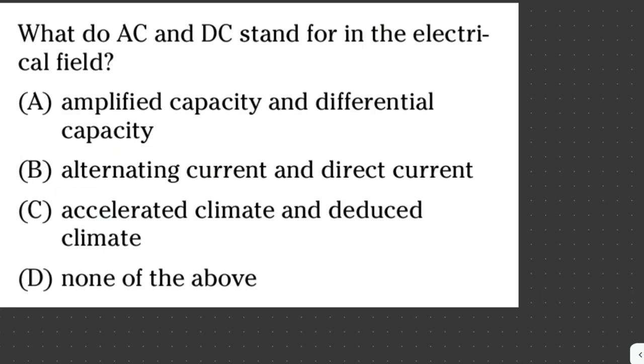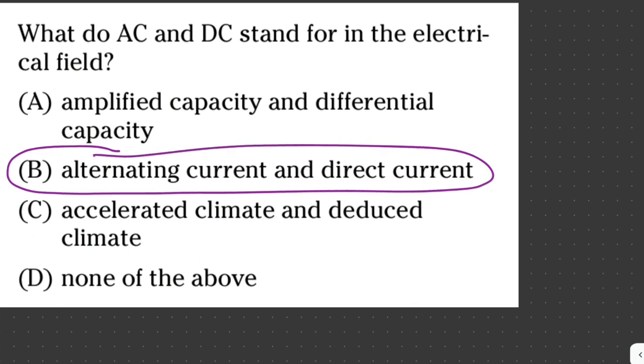What do AC and DC stand for in the electrical field? A, amplified capacity and differential capacity. B, alternating current and direct current. C, accelerated climate and reduced climate. D, none of the above. So the answer here is letter B. AC is for alternating current and DC is for direct current.